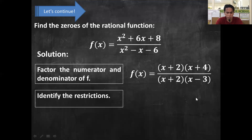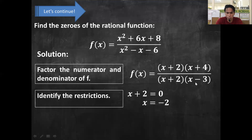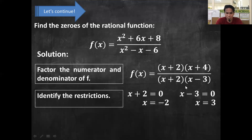Next, identify the restrictions. When we say restrictions, what will make the denominator equal to 0? We're going to equate the denominator equal to 0. Starting with x + 2 equated to 0, we get x = −2. The other factor is x − 3 equated to 0, so x = 3. If x = −2, then −2 + 2 = 0, making the denominator 0 and the function undefined. Same with x = 3: 3 − 3 = 0, so our denominator is 0 and our function is undefined. Those are the restrictions.